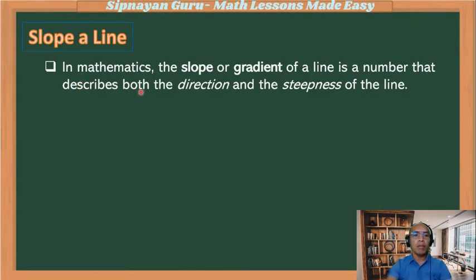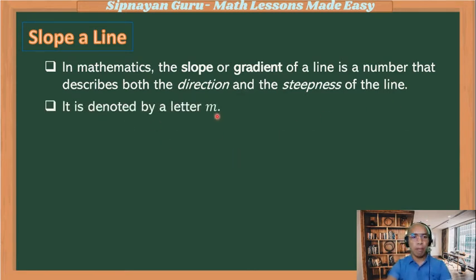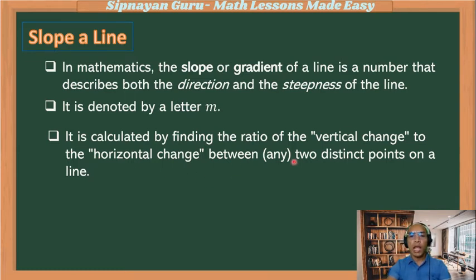The slope of a line in mathematics, or the gradient of a line, is a number that describes both the direction and the steepness of a line. It is denoted by the letter m. It is calculated by finding the ratio of the vertical change to the horizontal change between any two distinct points on the line. In layman's terms, we call it rise over run.